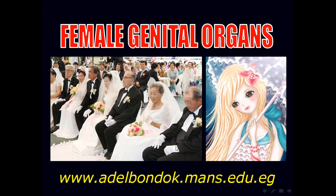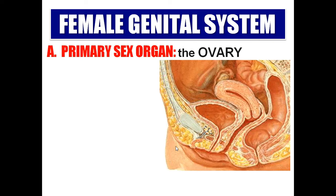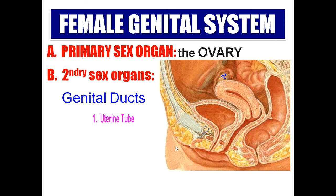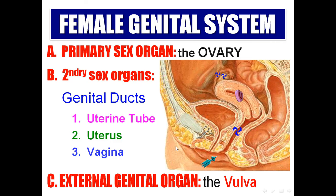The female genital system has three main components. The primary sex organ is the ovary. The secondary sex organs and genital ducts are the uterine tube, uterus, and vagina. The external genital organ is the vulva.